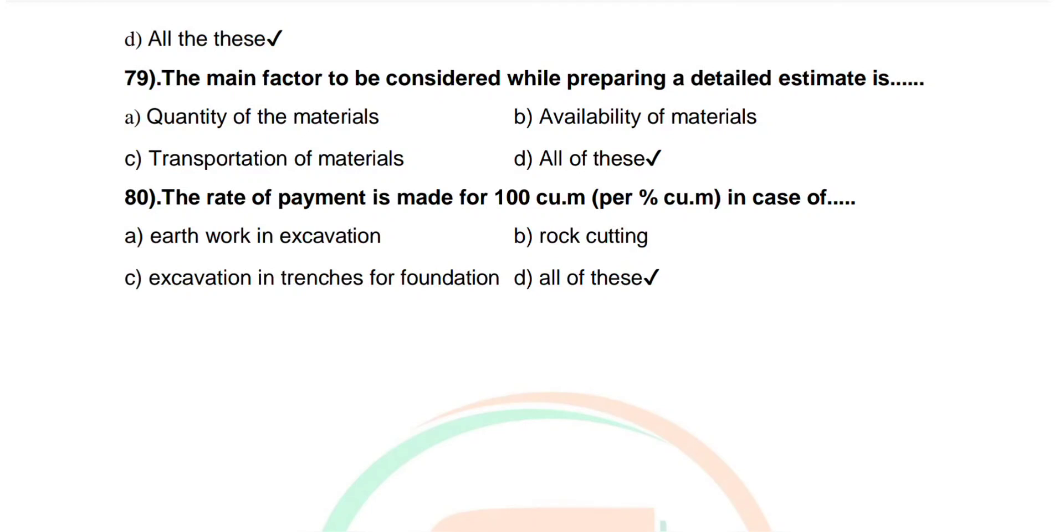Question number 79: The main factors to be considered while preparing a detailed estimate are quantity of the material, availability of material, transportation of material, or all of these. Correct answer: all of these. Question number 80: The rate of payment is made for 100 cubic meter in case of earthwork excavation, rock cutting, excavation in trench for foundation, or all of these. Correct answer: all of these.